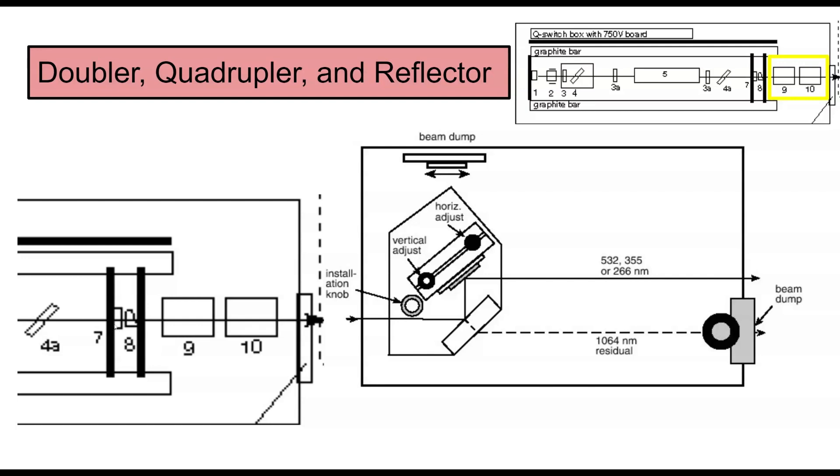The light will come through, they'll go through this doubler and quadrupler, hopefully turn it to 266, but there will be some residual of different wavelengths. Since some of it might only go through the doubler, some of it might only go through the quadrupler, and some of it might not even hit any of them.